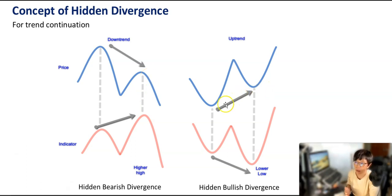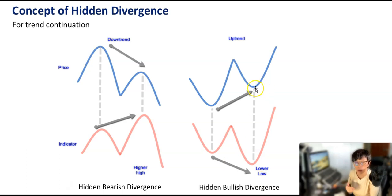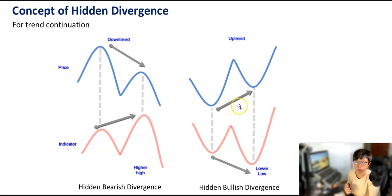When you have an uptrend, you're going to have a higher low, but your indicator is going to make a lower low. With this lower low, it says that the corresponding higher low is likely to be a trend continuation. So as long as price continues to move up, you're likely going to see a lower low being made in your indicator in a situation of hidden bullish divergence.